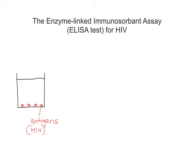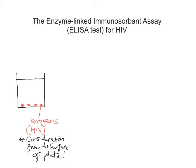We must consider the surface of this plate — the surface that the antigens are applied to. It has to be something that the antigens are going to stick to fairly well. The reason I'm referring to that particularly is because I have seen an exam question that asks about what factors for the ELISA test are important to consider. So the type of surface that we attach these antigens to is really important.